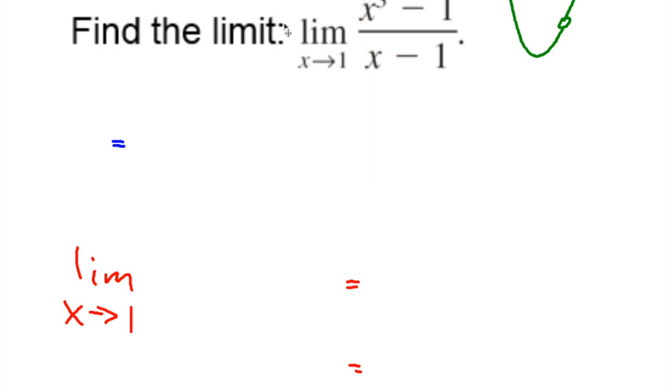Now when you graph this, we had a hole, and unfortunately direct substitution does not allow us to plug in 1 because you're going to end up with 0 over 0, and that of course is undefined. So that doesn't really help us out.